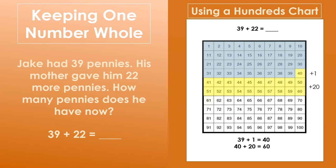Then, we can add on one more. 60 plus 1 equals 61. All together, we have added on 22 to the 39 that we started with. So, 39 plus 22 equals 61. Jake has 61 pennies now.